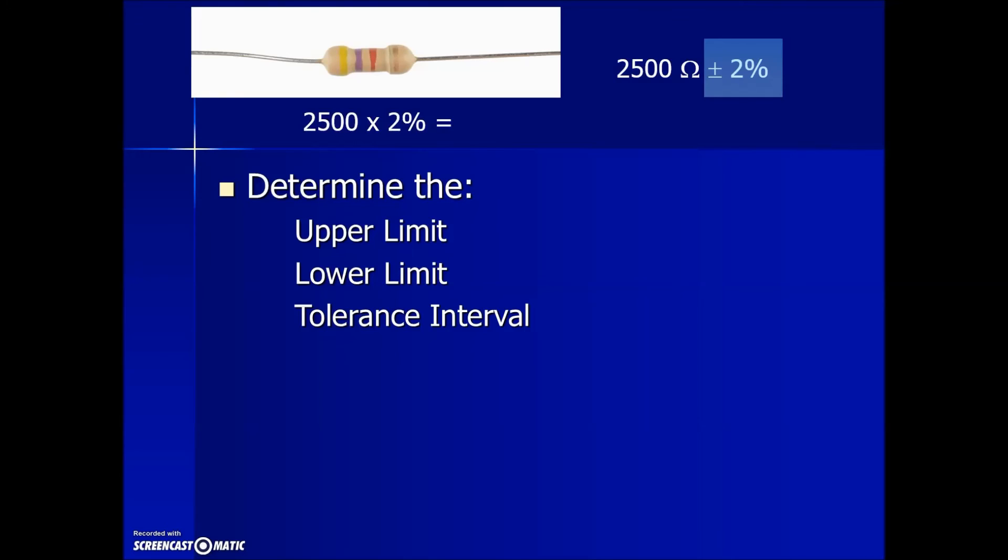We'll do that by taking the base standard measurement and multiplying it by 2 percent, expressed as a decimal, 0.02. Doing the multiplication gives us a variation amount of 50 ohms.